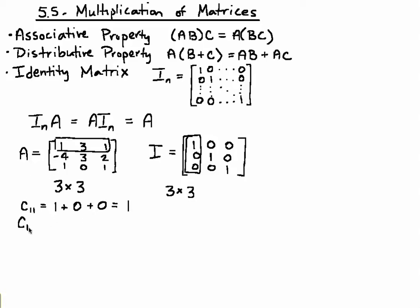And if we repeat this process with the first row and second column, we'll see that we'll get the answer of 3 as well. 1 times 0 is 0, 3 times 1 is 3, 1 times 0 is 0, giving us 3.